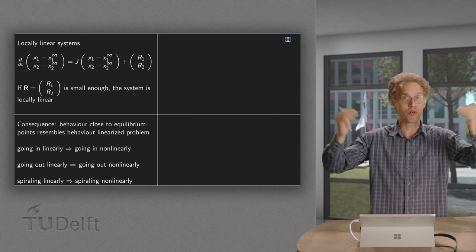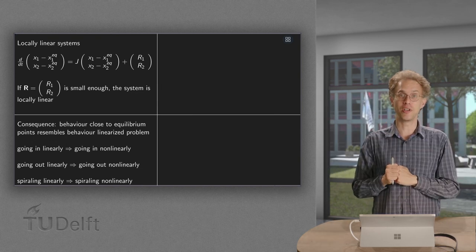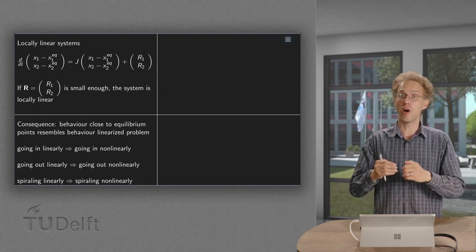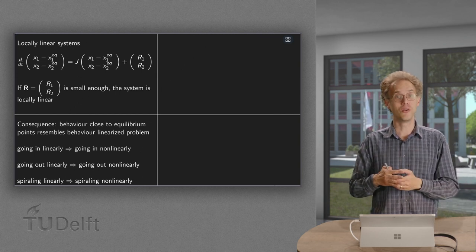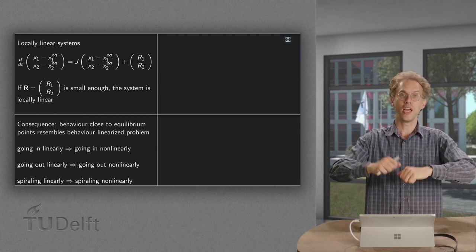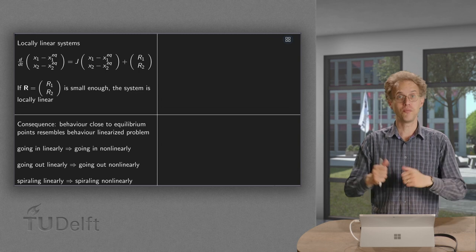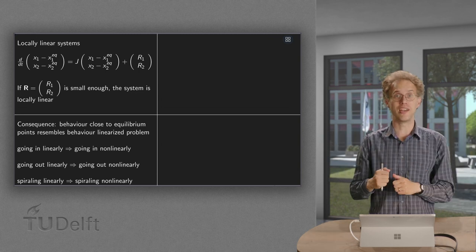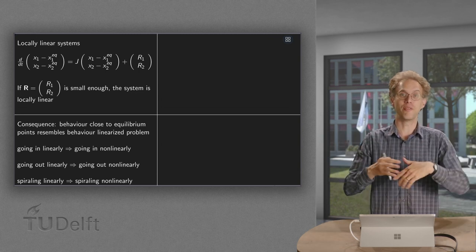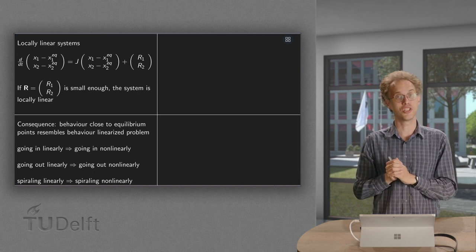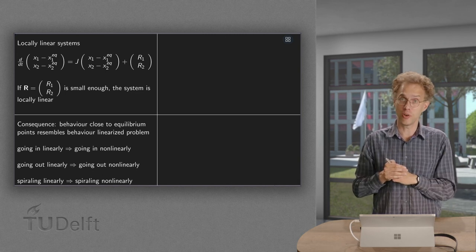So if we are going into an equilibrium point linearly, we will also go in the corresponding non-linear system into the equilibrium point. If we go out linearly, then in the non-linear system we will also go out. And combining the two, if you have a saddle point in the linear system, we will have a saddle point in the non-linear one.